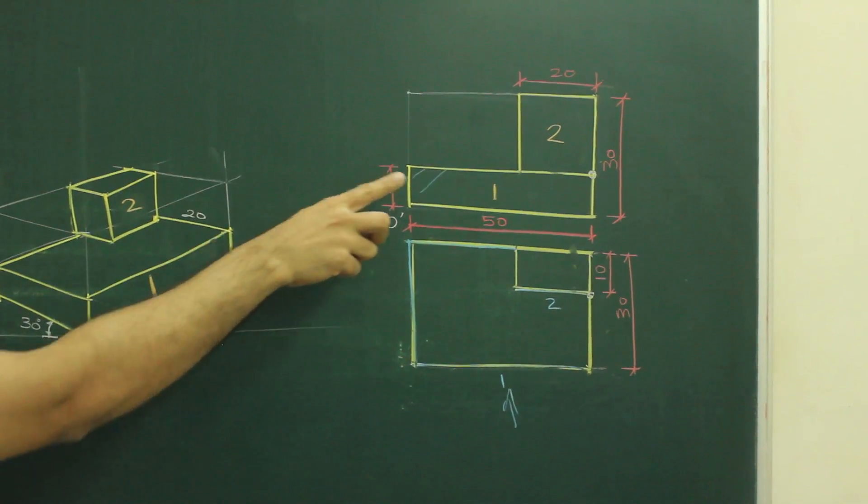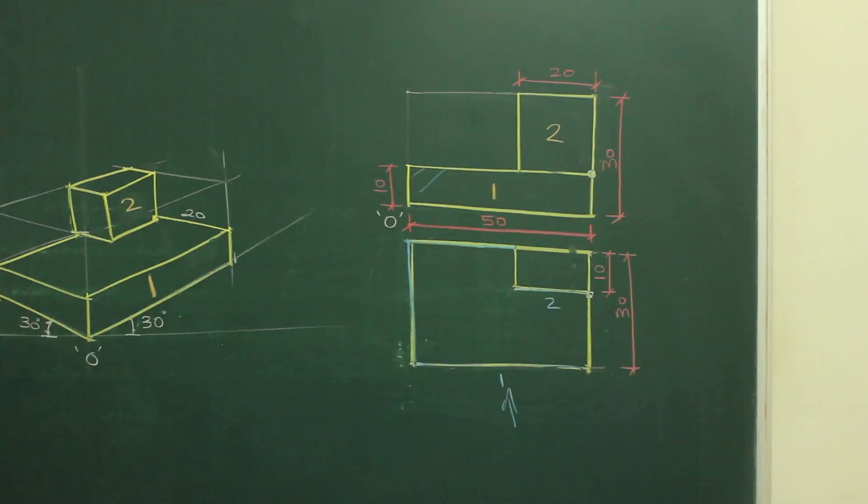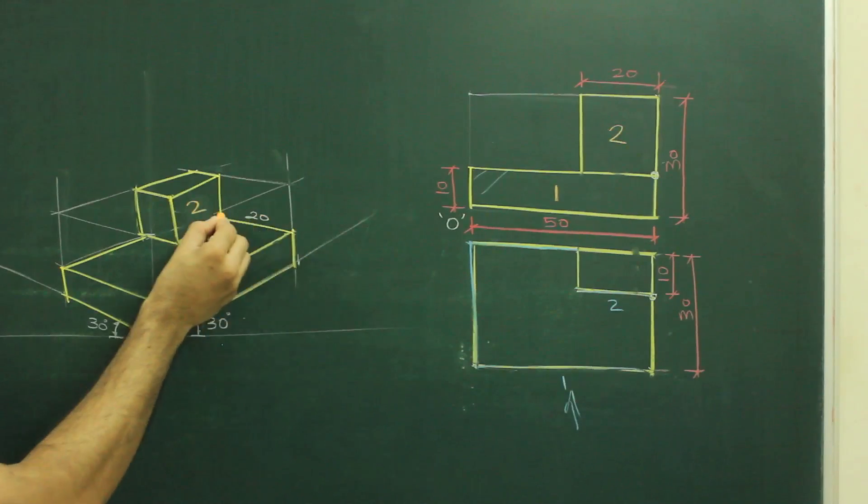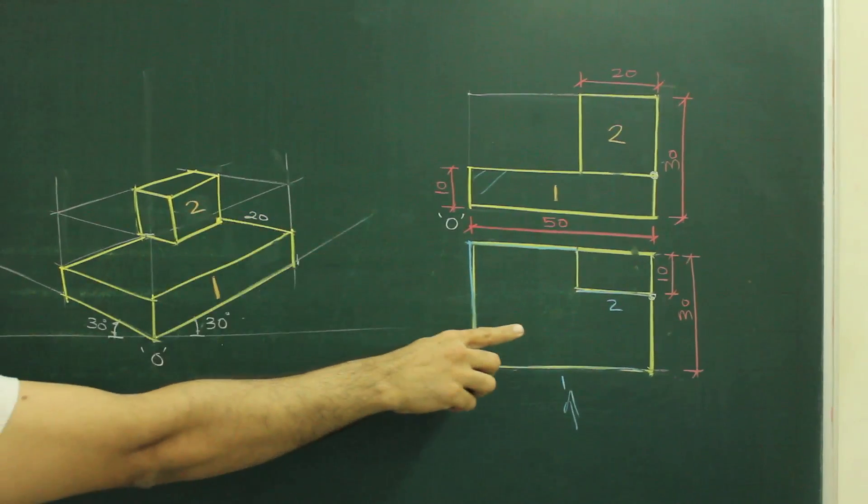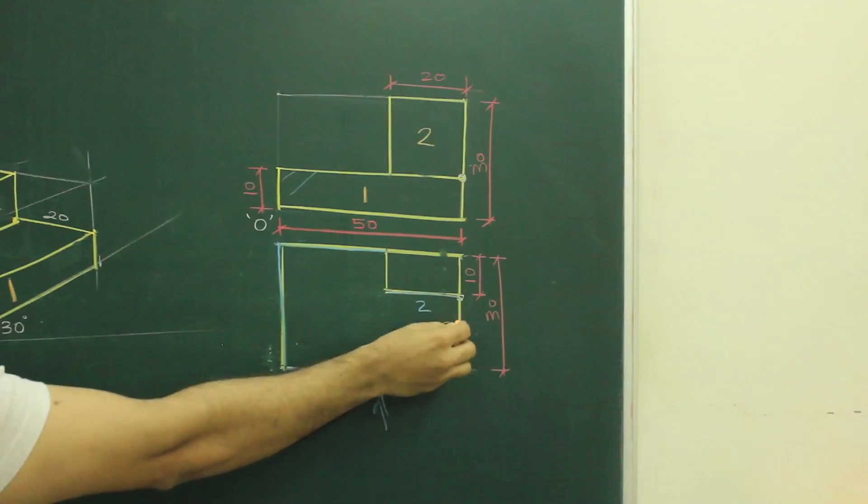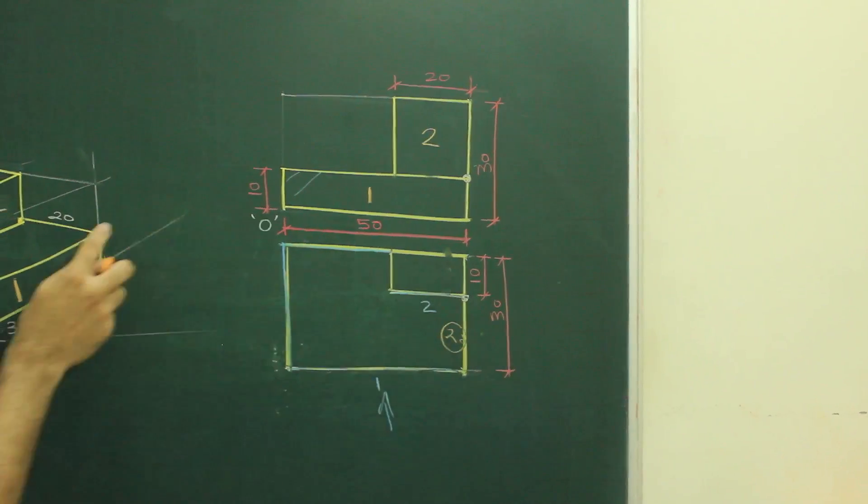From front view, you can't make out how much it is behind. Because in front view, we can't see width. We came to know that it is behind by 20 from here. If you see the main diagram, see this part, this is 20. It's going behind. So we went behind.